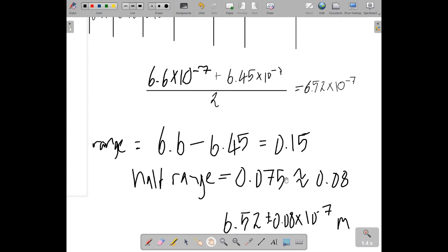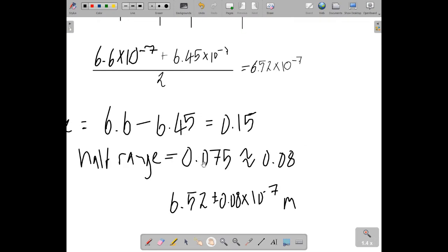So half of that range, to give me my plus or minus value, is 0.075. Now I'm going to round that to 0.08, because that is the smallest number of my actual calculated mean.